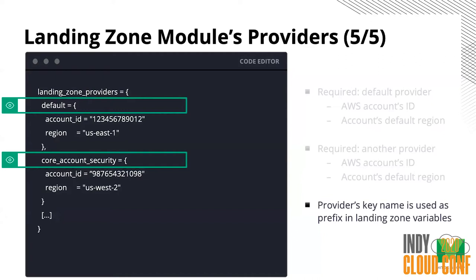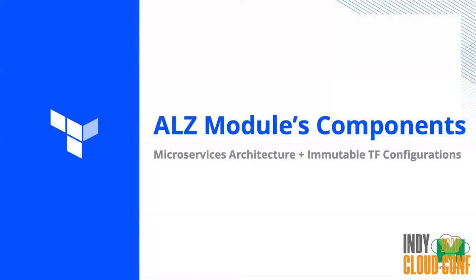Switching to components — why are we not just saying Terraform configurations and instead calling them components? Because we are trying to help customers and everyone who is using this module to use an immutable approach in the microservices architecture fashion. The Terraform defined for every component is usually just one Terraform resource per component, sometimes two or three, but we want to keep it as small as possible.